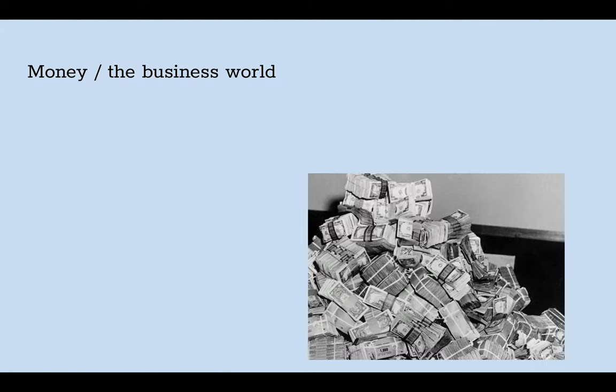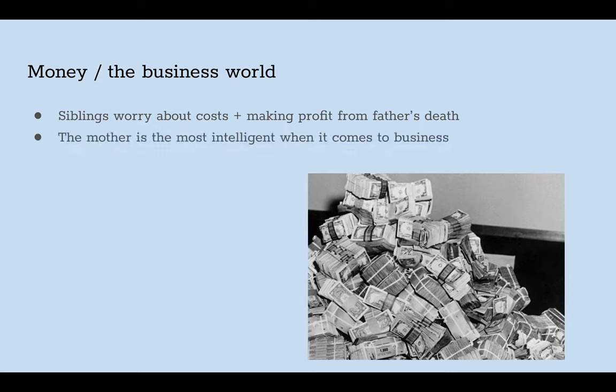The first theme is money and the business world. The siblings worry about the costs of taking care of their mother and assume she would need support, as without a man a woman is seen as weak. They also want to profit from their father's death through the inheritance of his estate. The mother, however, turns out to be the most intelligent when it comes to business — she managed to turn the farm's business around after years of neglect when her husband was in control.